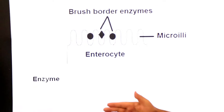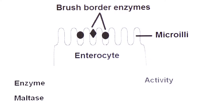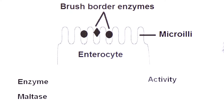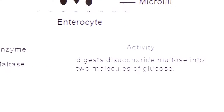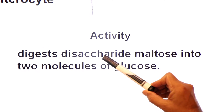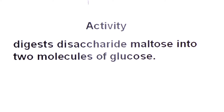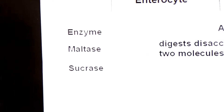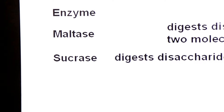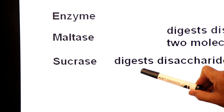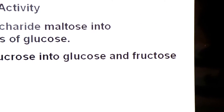Now we will look at each brush border enzyme and its activity. The first enzyme, maltase, is a maltose-breaker enzyme. It digests the disaccharide maltose into two molecules of glucose. The second brush border enzyme, sucrase, digests the disaccharide sucrose into glucose and fructose.